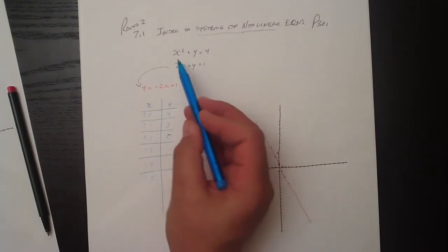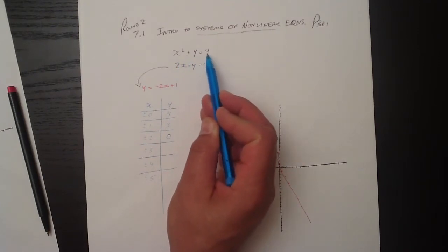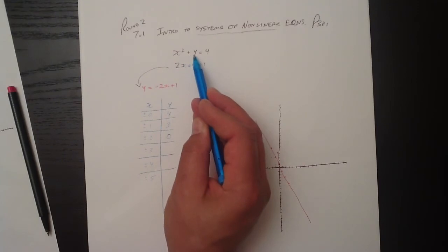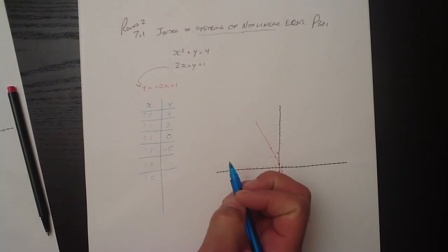For a 3, we get 3 squared is 9. Or minus 3 squared is also 9. 9 plus something is 4. Well, 9 plus minus 5 is 4. So minus 5 must be the corresponding y-coordinate.